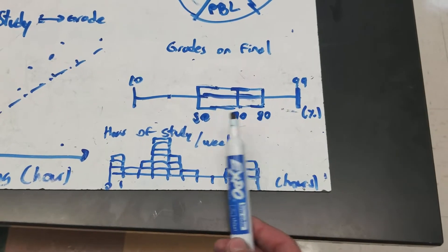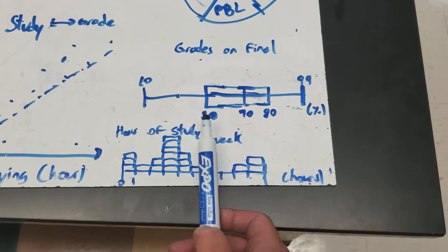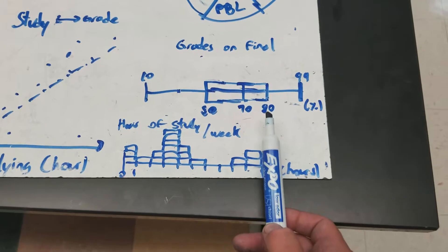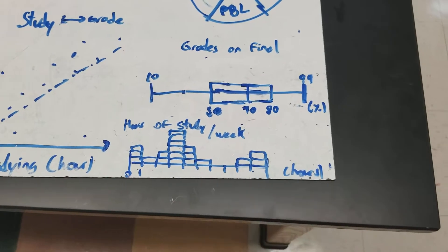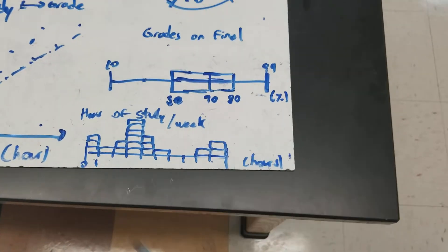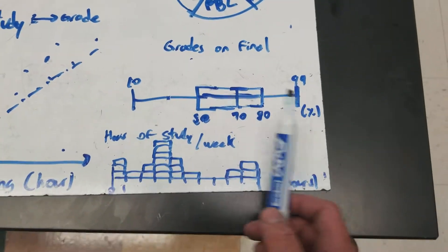But then most grades fell between 50 and 80, with 50 being the beginning of the quartile here, 70 being like your average, and 80 being the end of the third quartile. So this is used to show where most grades fell. And you can find videos of that in more detail on how to use and create these graphs.